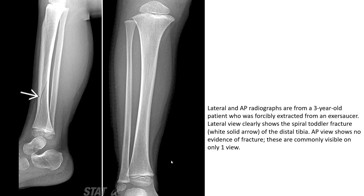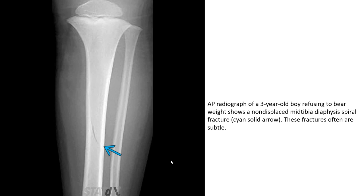The AP view shows no evidence of fracture — these fractures are commonly visible on only one view. AP radiograph of a 3-year-old boy shows a non-displaced mid-tibial shaft spiral fracture, indicated by the cyan solid arrow. These fractures are often subtle.